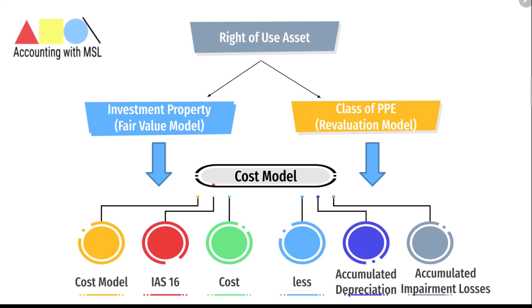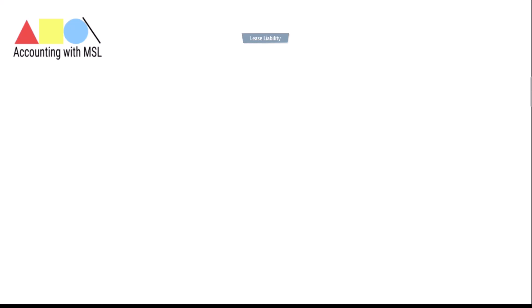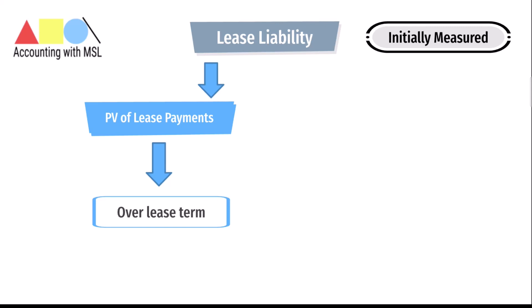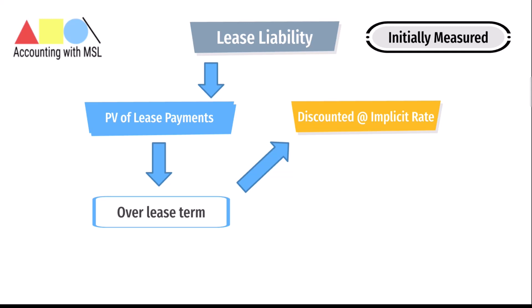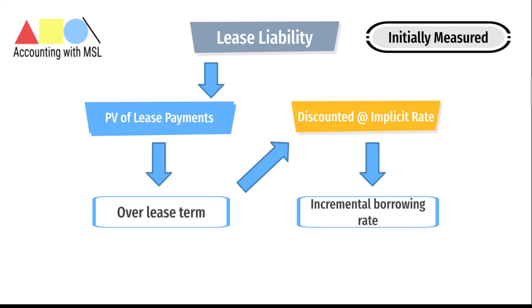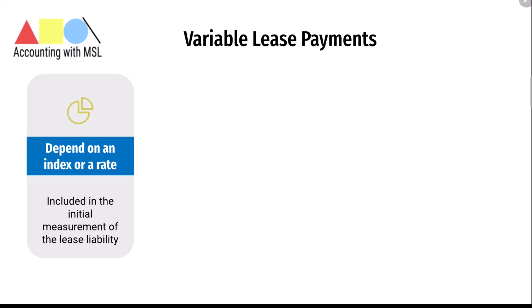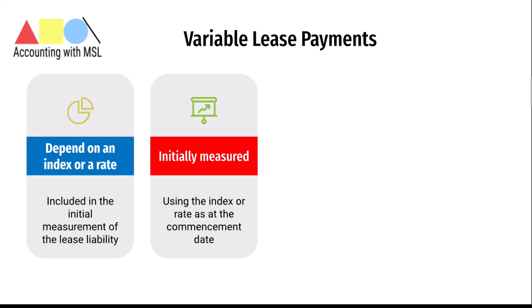How will the lease liability be measured? The lease liability is initially measured at the present value of the lease payments payable over the lease term, discounted at the rate implicit in the lease if that can be readily determined. If not, the lessee shall use the incremental borrowing rate. Variable lease payments that depend on an index or rate are included in the initial measurement of the lease liability, measured using the index or rate as at the commencement date. Amounts expected to be payable under residual value guarantees are also included.